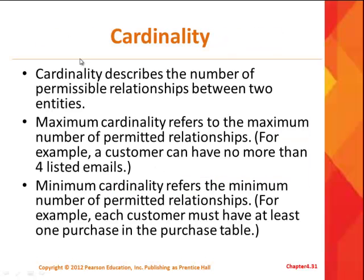Let's talk a little more about cardinality. Cardinality describes the number of permissible relationships between two entities. You have a maximum cardinality and a minimum cardinality. When you look at the crow's feet notation, the maximum cardinality is the symbol right next to the entity — the rectangle part of the ERD. The minimum cardinality is on the inside, and that's always a zero or a one. The maximum is either going to be a one or many.